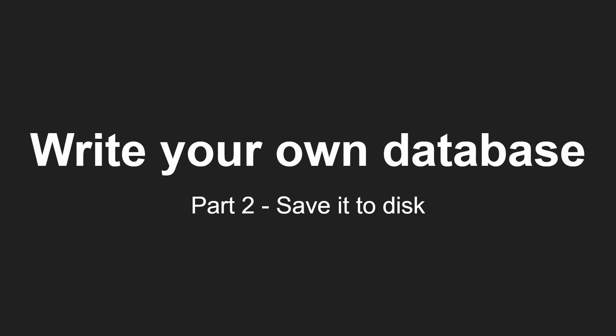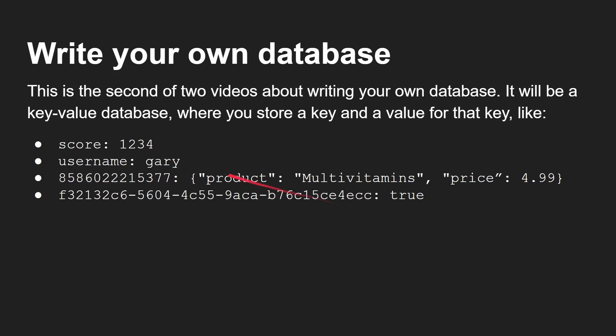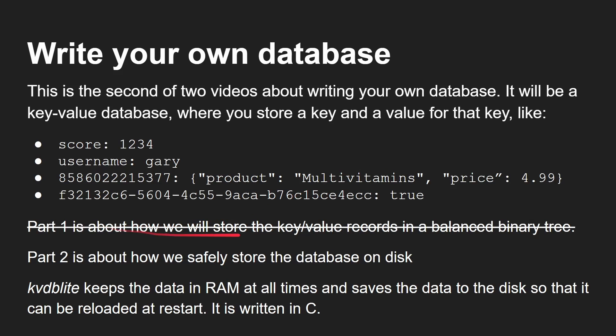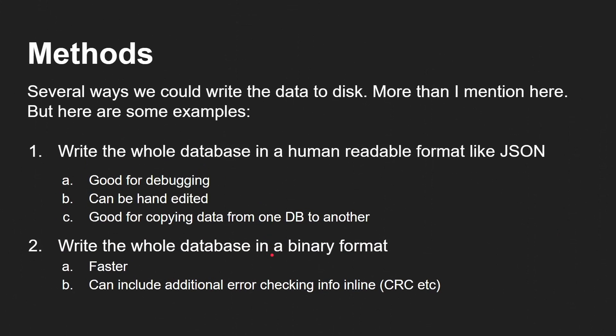In this one, we're going to be looking at how you save that data from that balanced binary tree — that AVL tree we talked about in the first video — how you save that to disk. Remember, what we're doing is writing a database that stores a key and a value: score, username Gary, a barcode with some JSON, a unique ID. It's always a unique key and a value, and the value can be complex, like JSON. In part one we looked at how you store that in memory using a balanced binary tree; now we're looking at how you write it safely to disk.